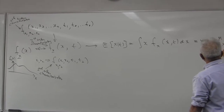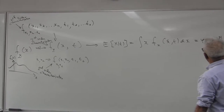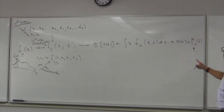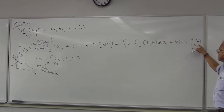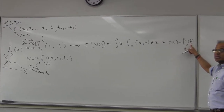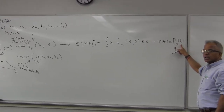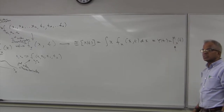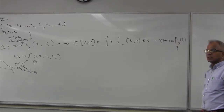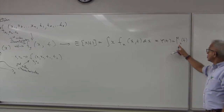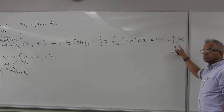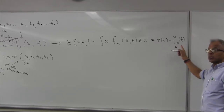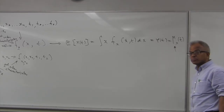The mean could be a function of time — this is important to notice. For a random variable the mean is always a constant, but here it is no longer a random quantity; it's a deterministic quantity that is a function of time.